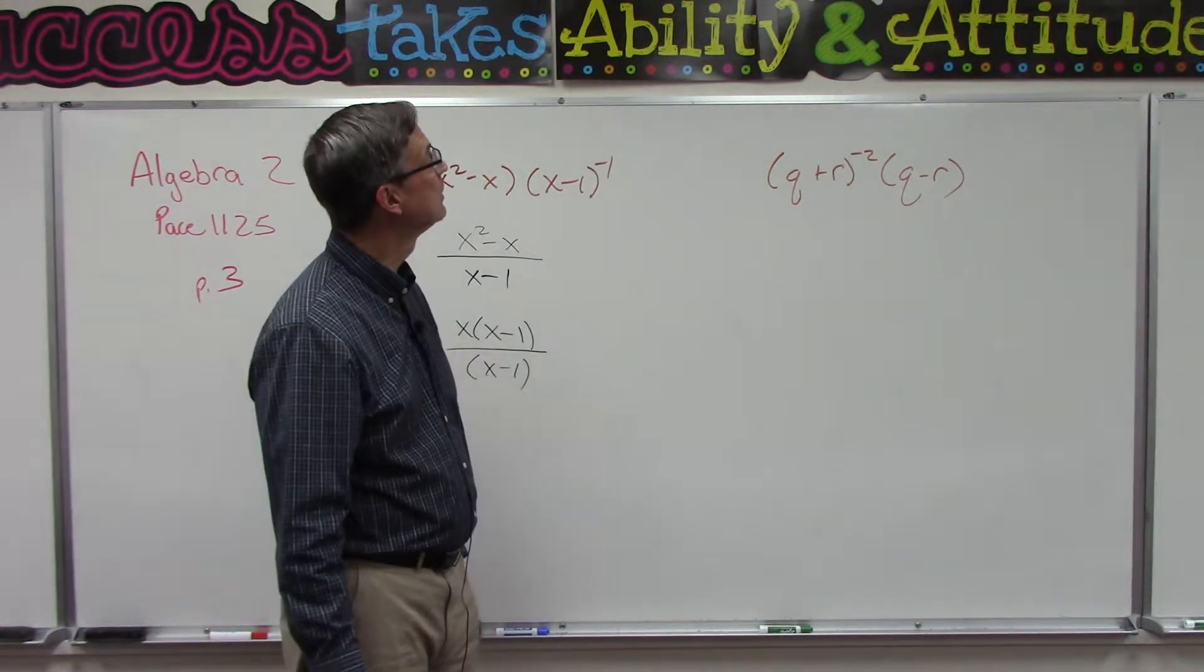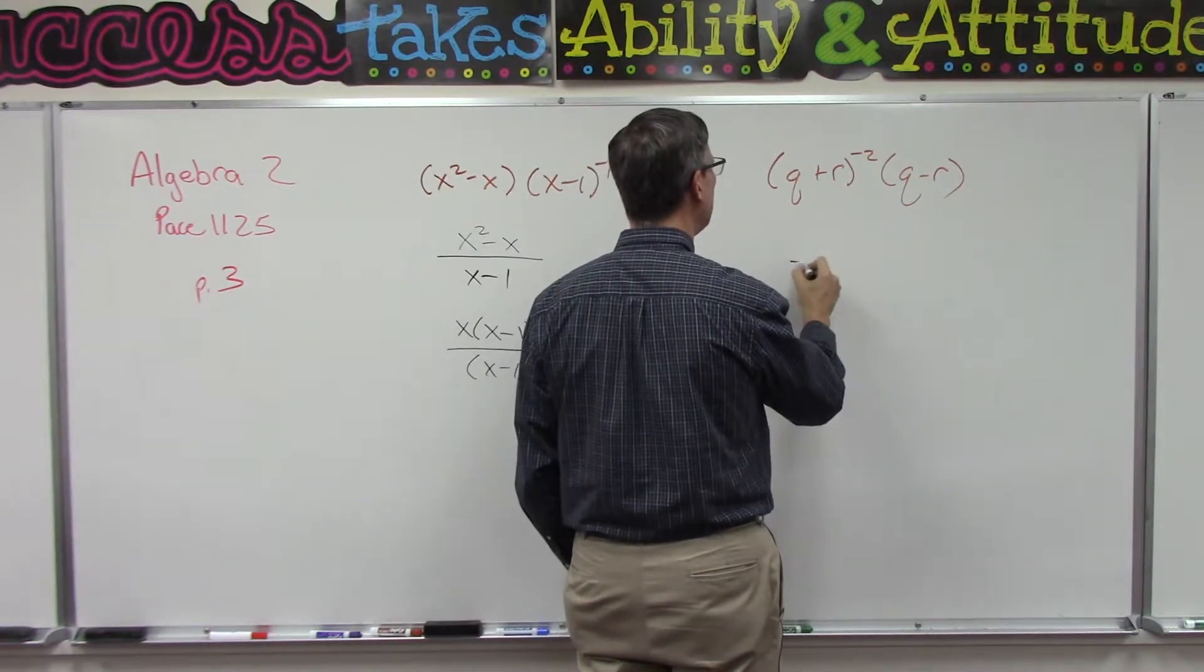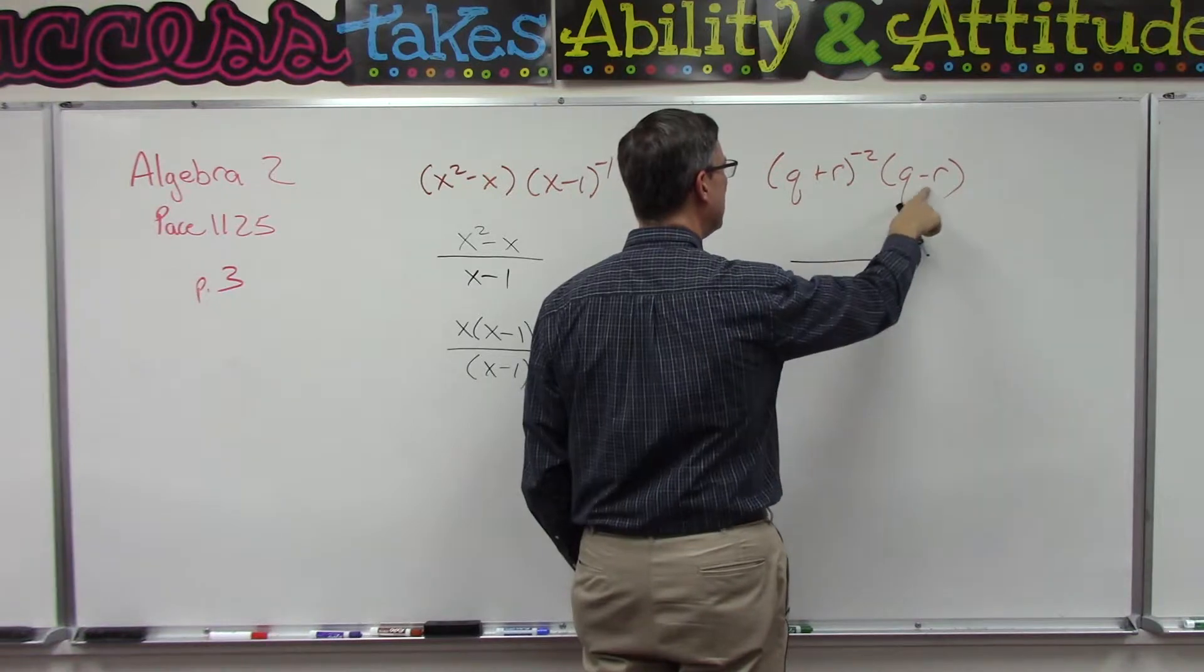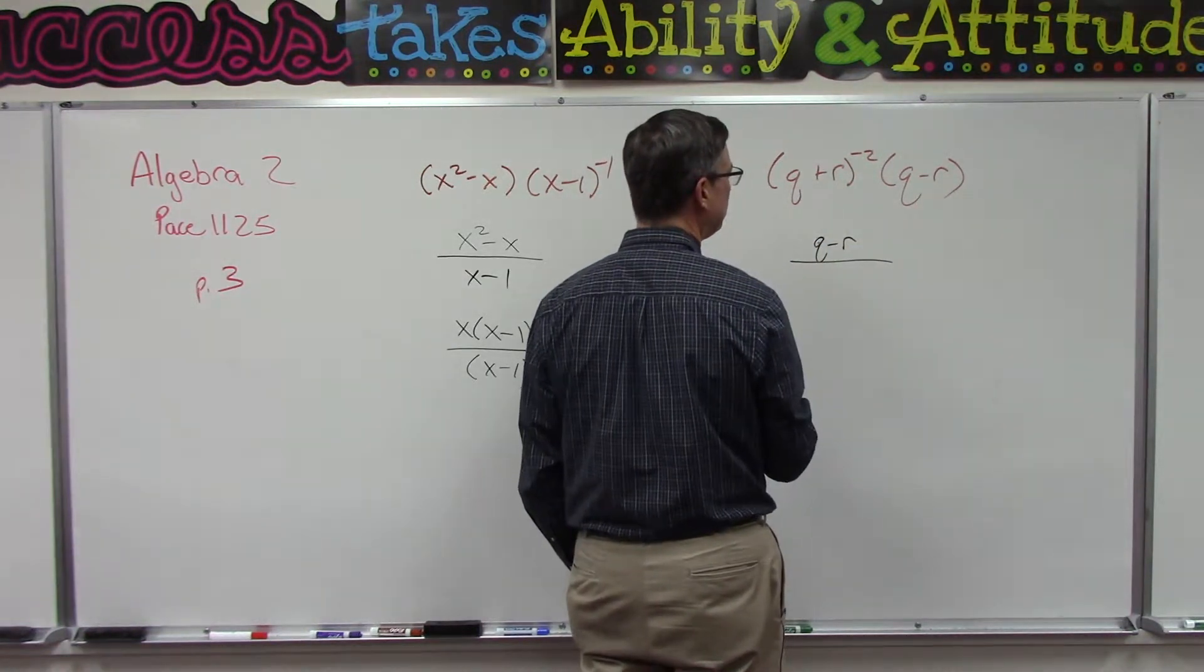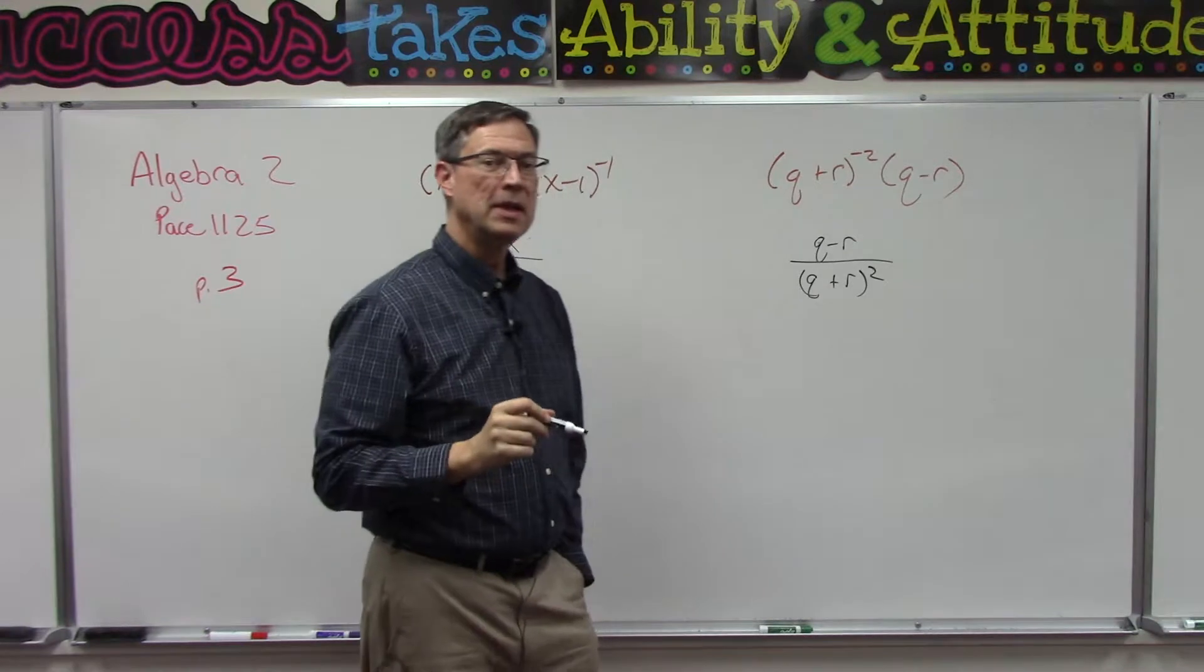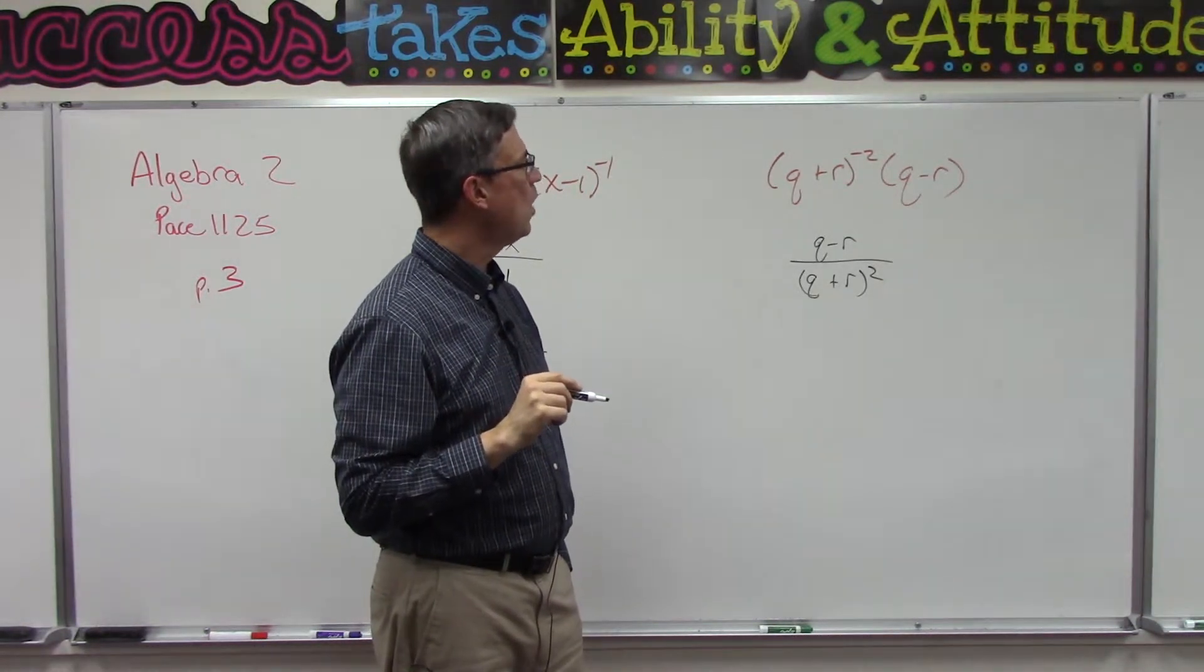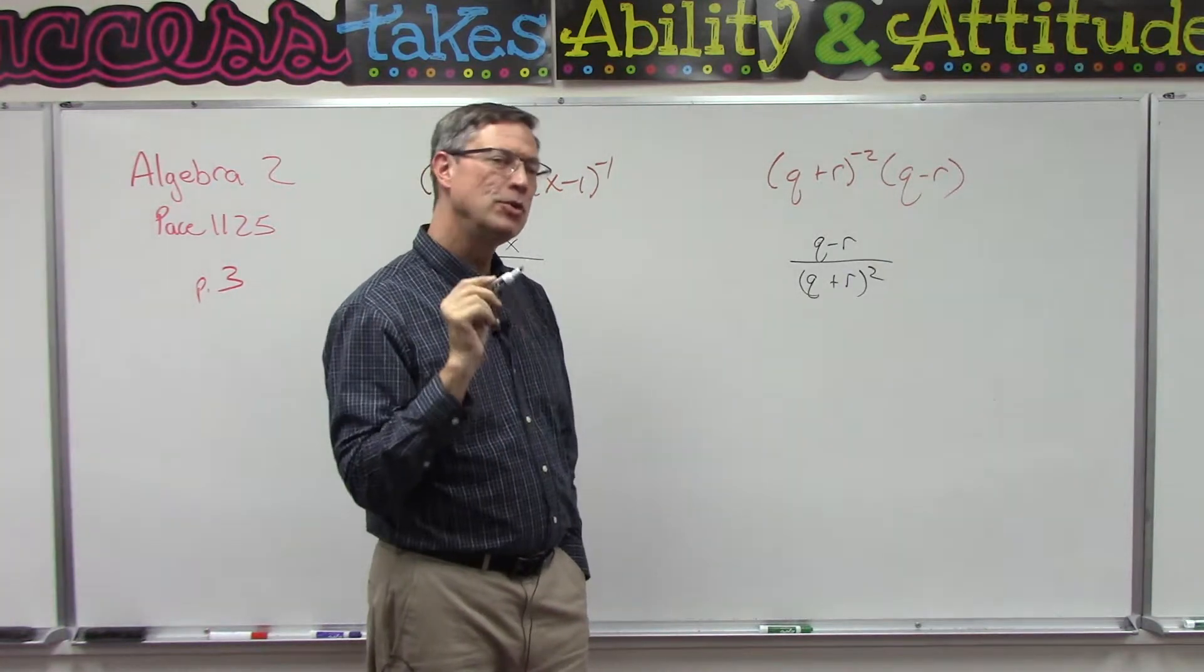All right, here we go on this one. The negative exponent is going to flip to the bottom so we'll leave this Q minus R on the top, then we're going to have Q plus R in parentheses squared. Now remember, every time we do one of these I have students who think 'oh I know what that is, that's Q squared plus R squared' but remember we can't do that. We can't just distribute the negative, we actually have to multiply it times itself.